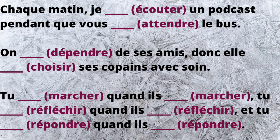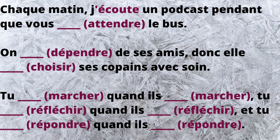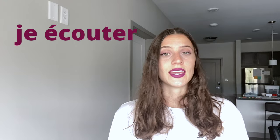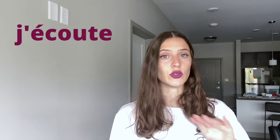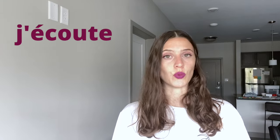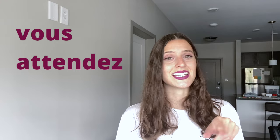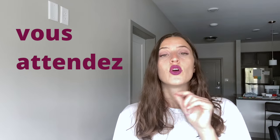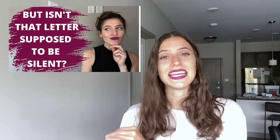If you got all of that, now we can move on to the final assessment. You're going to look at the same sentences you saw in the pre-assessment activity and conjugate the verbs depending on the subject pronoun. The correct answer for the first sentence: 'Chaque matin, j'écoute un podcast pendant que vous attendez le bus.' Note that je + écouter becomes j'écoute — it's an -er verb so you delete -er and add -e. The second verb attendez goes with vous. Also note that the normally silent -s in vous is pronounced when followed by attendez — if you're not sure why, check out my videos on the French liaison.